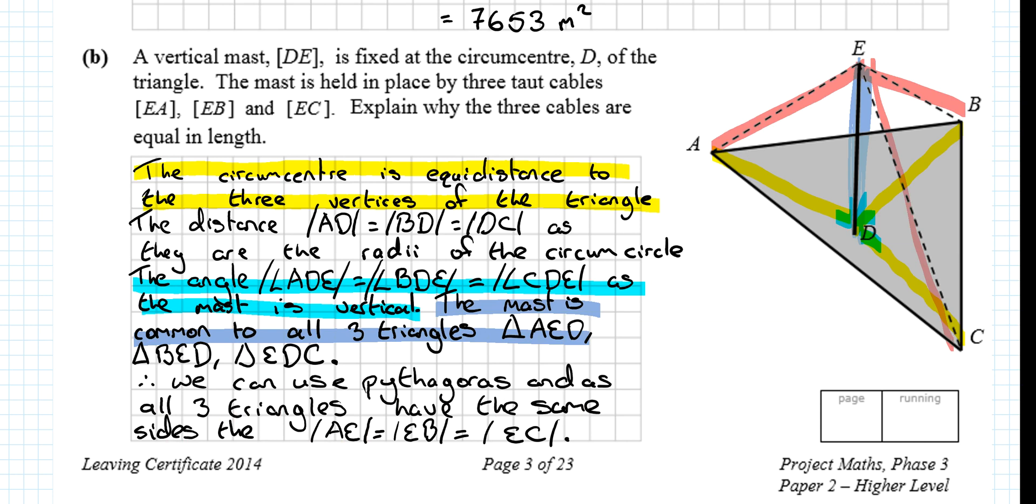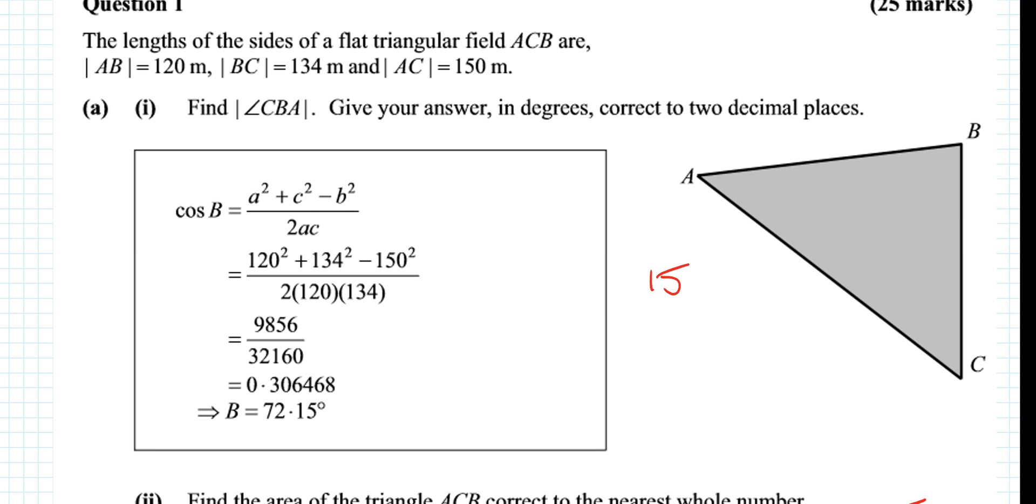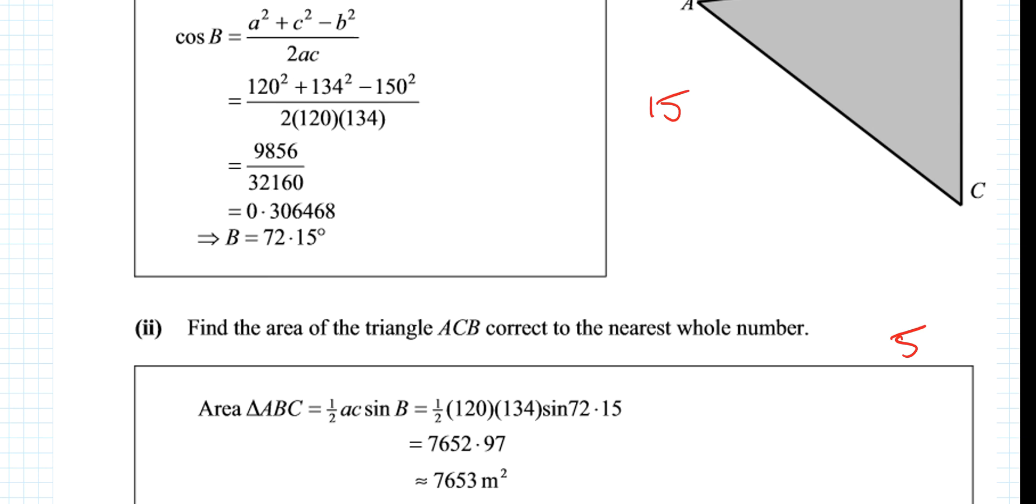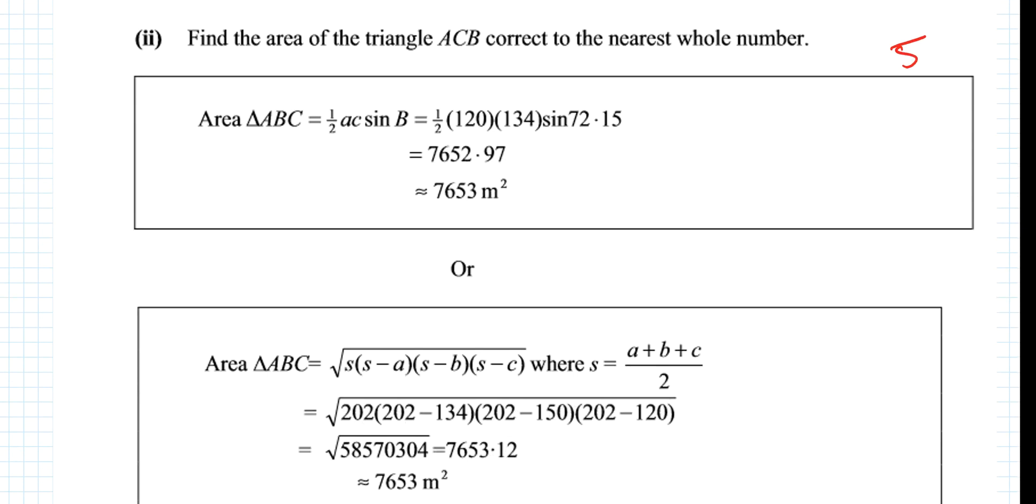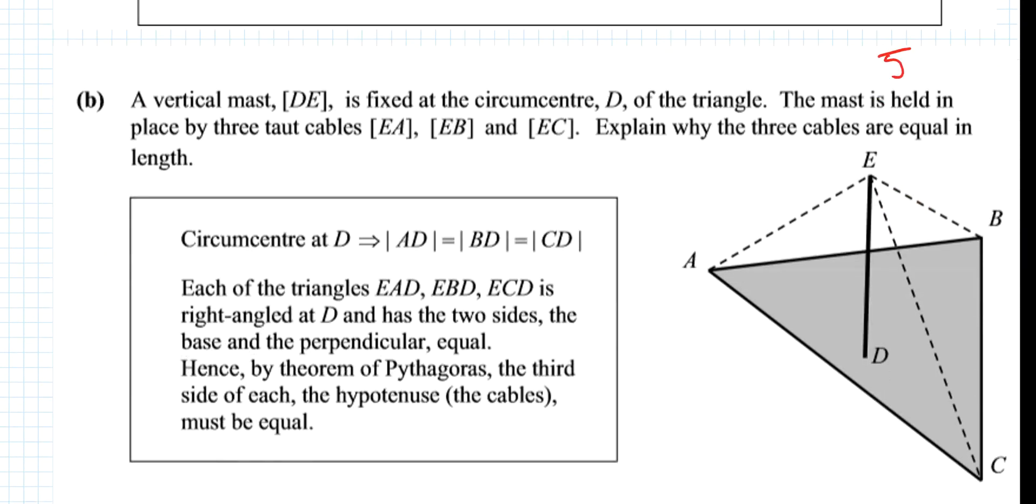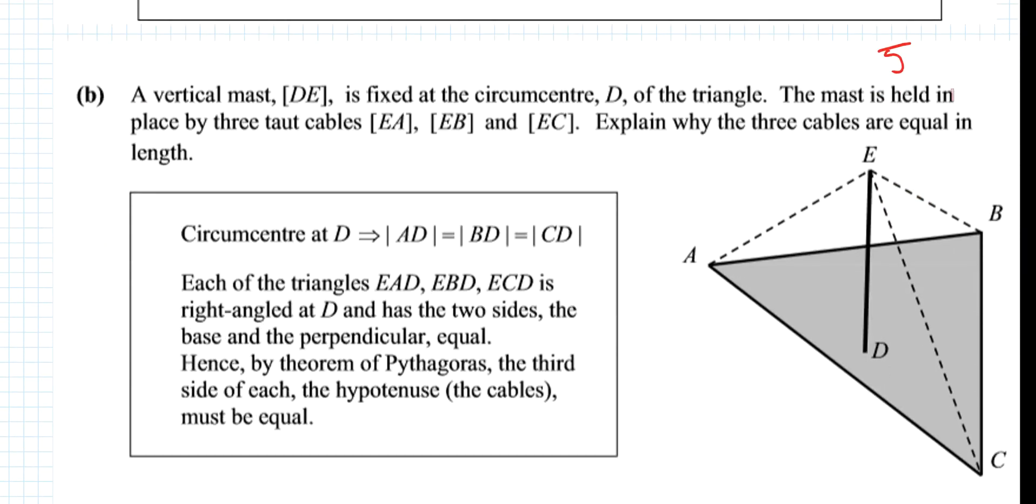Marks going for the question then. Fifteen marks to begin with, with rearranging the cosine rule. I mean, absolutely lovely fifteen marks there. Five marks for the area. Nice little five marks again. Which leaves five marks for the last part of the question as well. And the explanation. Hopefully you found the video useful anyways.